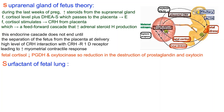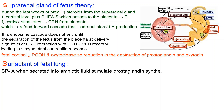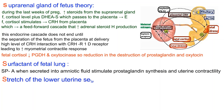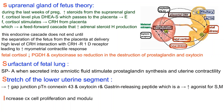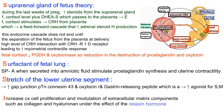Surfactant protein A, when secreted into amniotic fluid, stimulates prostaglandin synthesis and uterine contractility. Stretch of the lower uterine segment increases expression of gap junction protein connexin 43, oxytocin receptors, and gastrin releasing peptide, which is a stimulatory agonist for smooth muscle. I: Increased cervical cell proliferation and modulation of extracellular matrix components such as collagen and hyaluronan under the effect of the relaxin hormone.